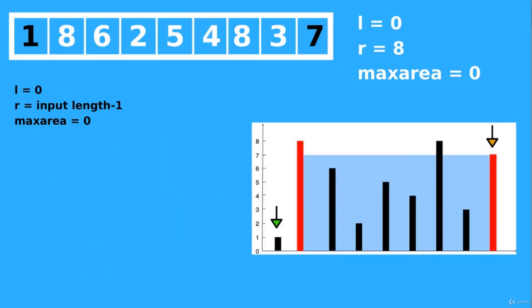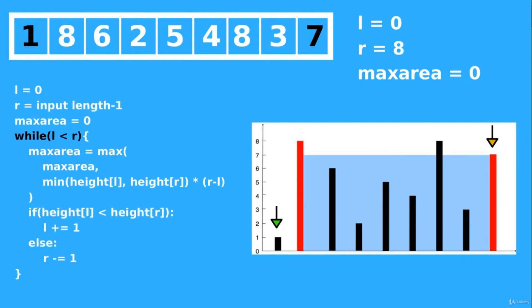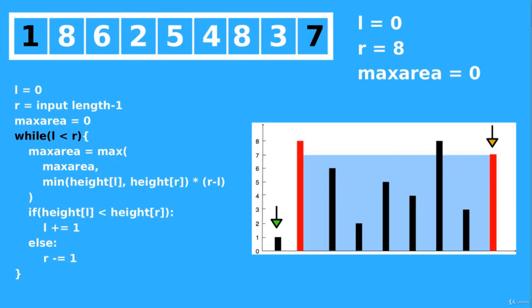Let's start the walkthrough. We initialize the left pointer to the first element, the right pointer to the last element, and the maximum area to zero, then start our loop.